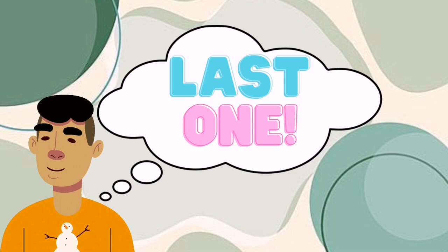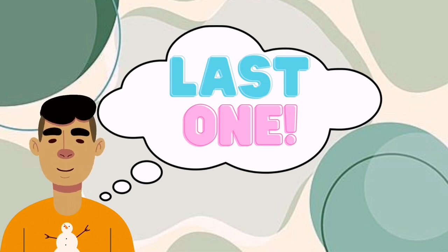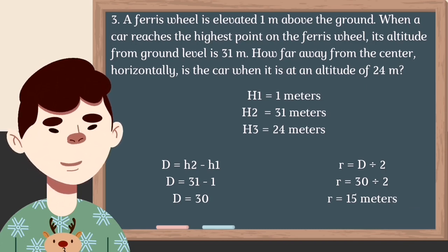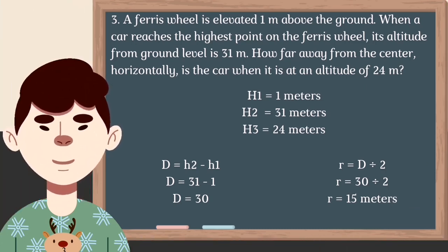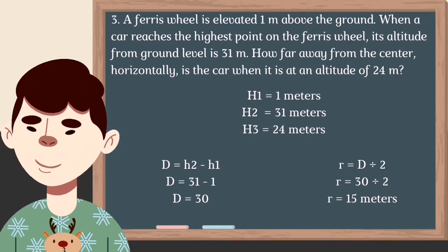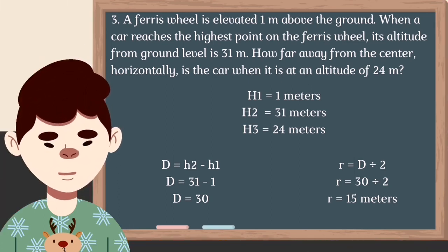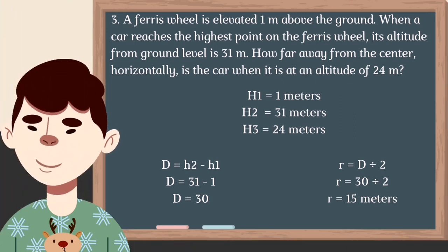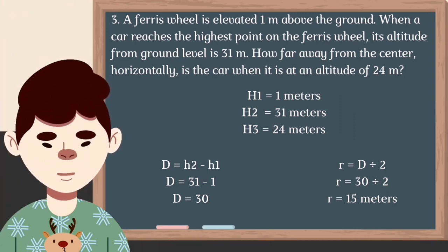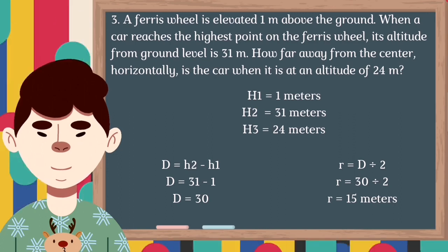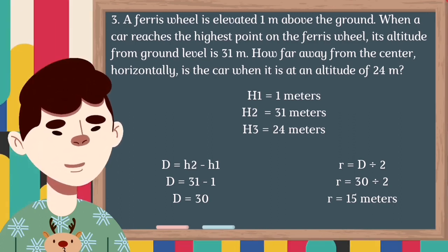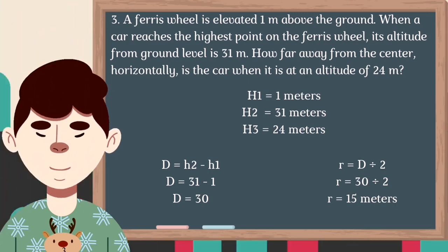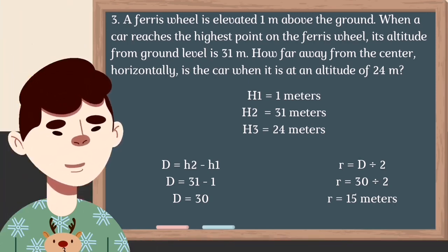Now let us answer our final problem. Problem number 3: A ferris wheel is elevated 1 meter above the ground. When a car reaches the highest point of the ferris wheel, its altitude from ground level is 31 meters. How far away from the center, horizontally, is the car when it is at an altitude of 24 meters? So height H1 = 1 meter, H2 = 31 meters, and H3 = 24 meters.